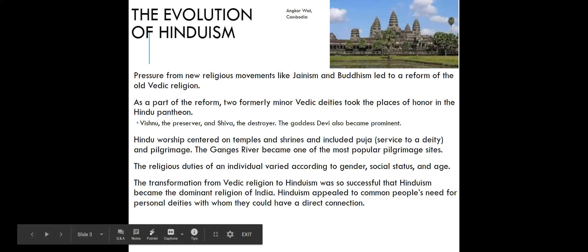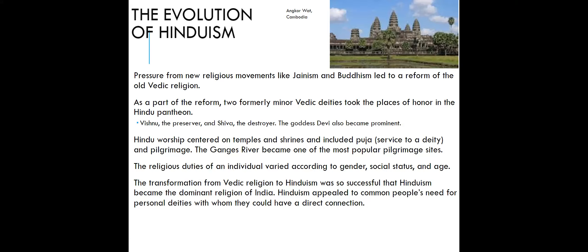Pressure from new religious movements led to a reform of the old Vedic religion. Buddhism in particular, especially after it became the dominant religion of the Mauryan Empire under Ashoka, led to more people leaving the Vedic faith. As a result of this reform, the foundational elements of Vedic religion incorporated the intense personal religious devotion, fertility rituals, and symbolism of the southern Dravidian cultures as well as some elements of Buddhism. Sacrifice became less important and personal devotion to the gods increased.